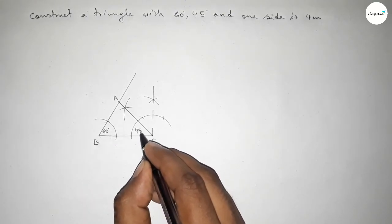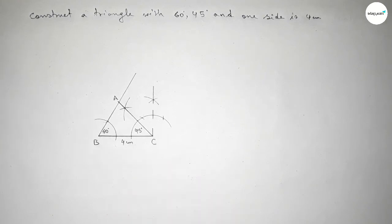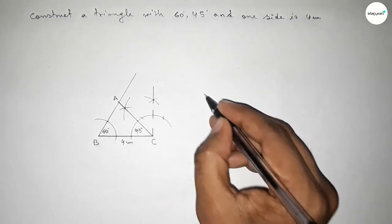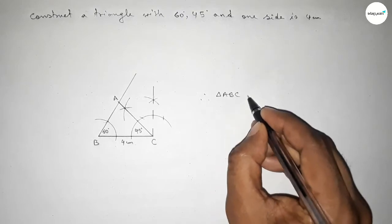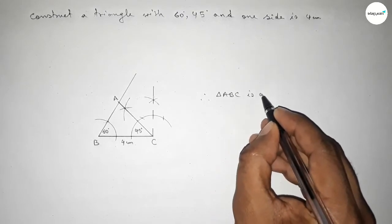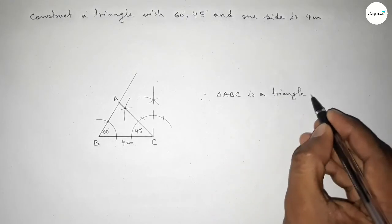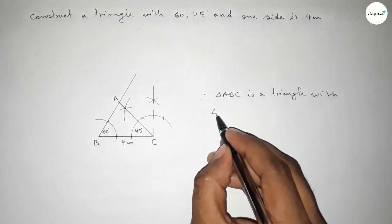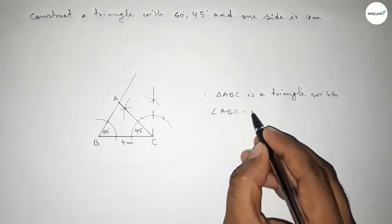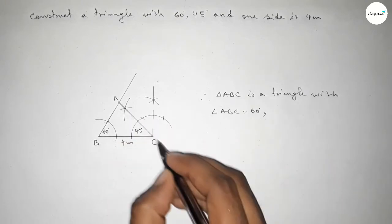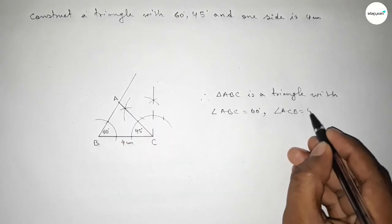This angle is 60 degrees, this angle is 45 degrees, and this side is 4 centimeters. Therefore triangle ABC is a triangle with two given angles: angle ABC equals 60 degrees and angle ACB equals 45 degrees.